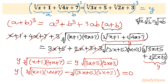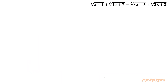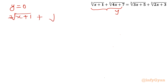Since the product f·g = 0, either y = 0 or the bracket equals 0. Let's find the first case: y = 0, meaning cube root(x+1) + cube root(4x+7) = 0. Taking one term to the right: cube root(x+1) = minus cube root(4x+7).